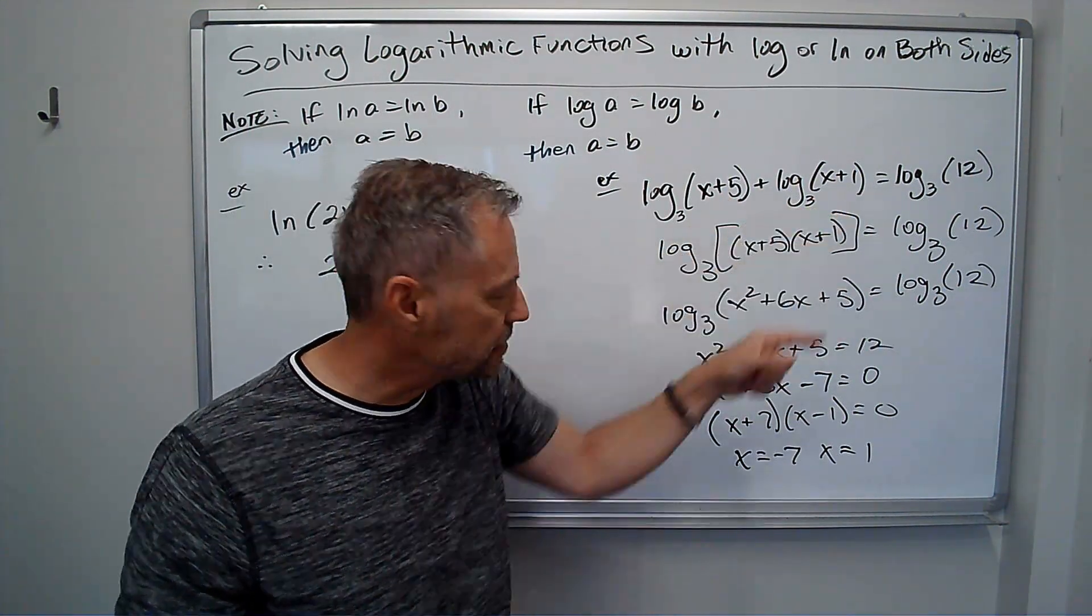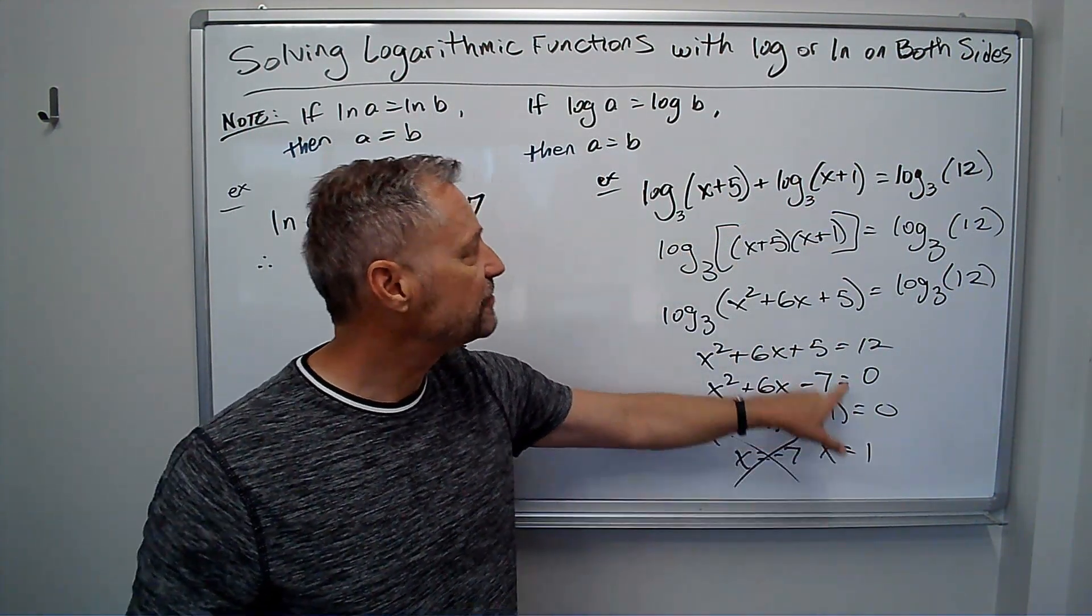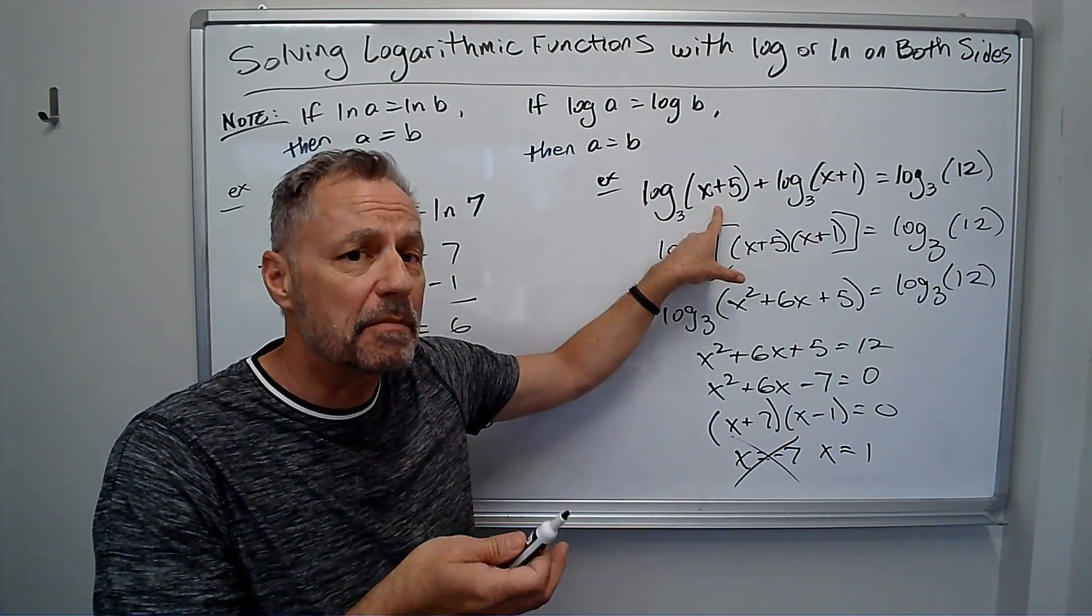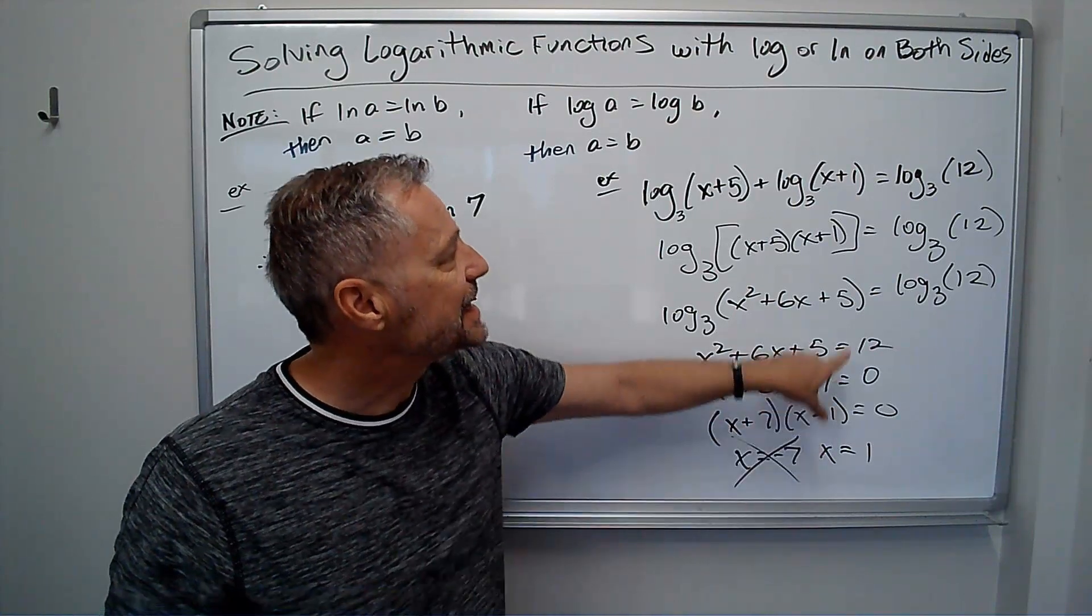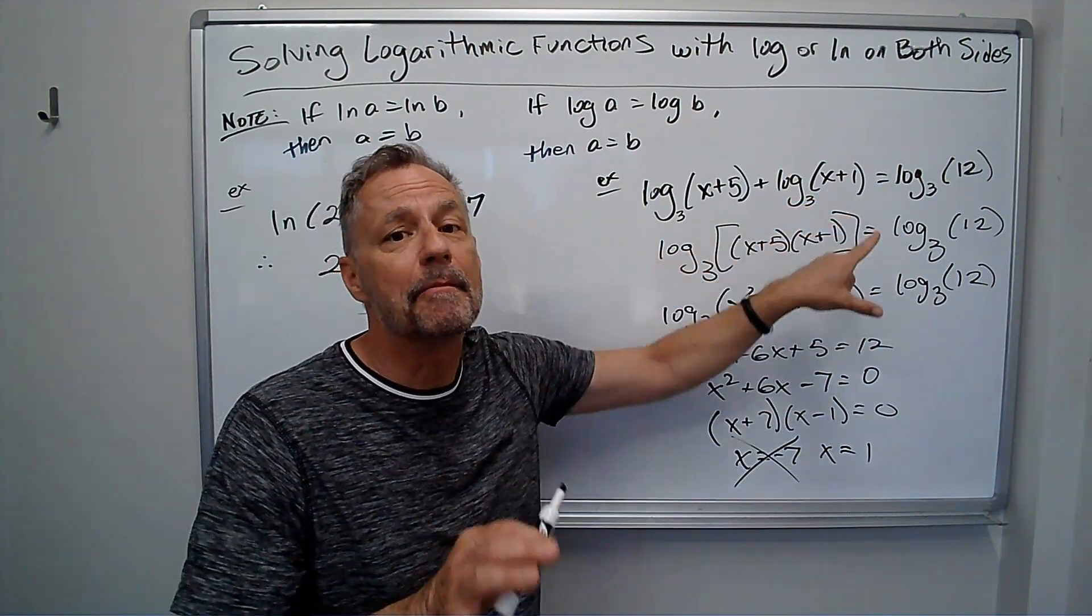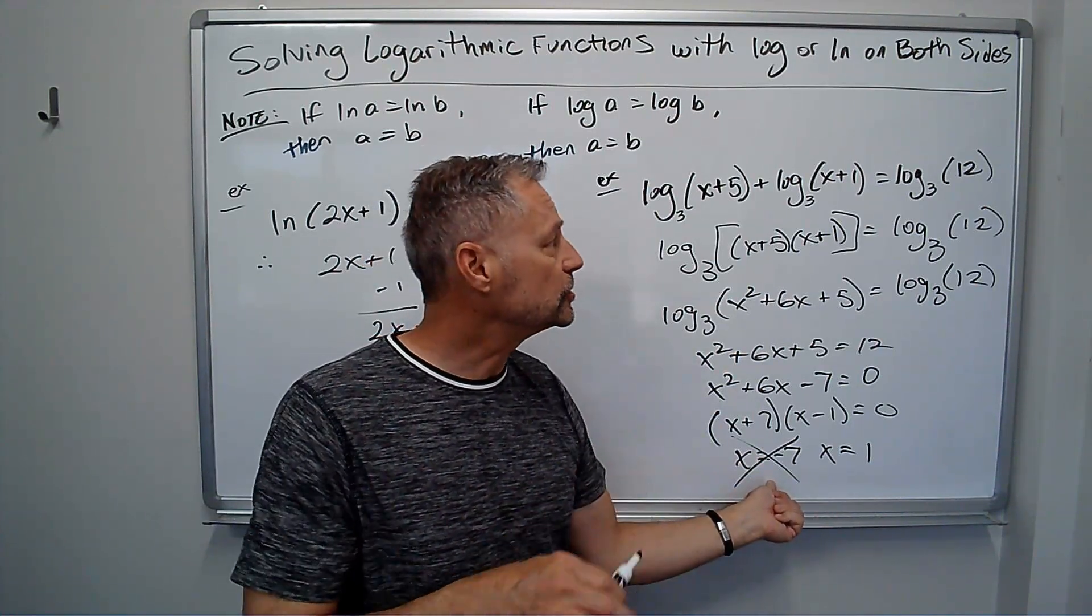It doesn't work here either. 1 is okay because if I plug it in here, I get log base 3 of 6. That's okay. 6 is a positive number. The argument is positive. And here if I plug in 1, log base 3 of 2, 2 is a positive argument. I'm okay. But make sure it's not an extraneous solution.